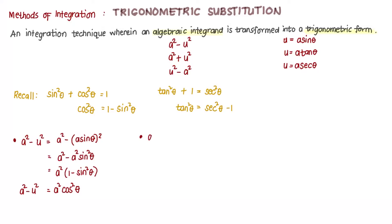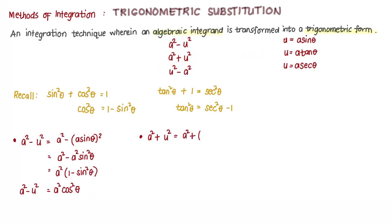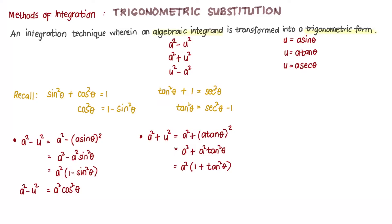For the second pattern, a squared plus u squared — you can write that in any order. For this pattern, we let u be equal to a tangent of theta. Substituting, we have a squared plus a tangent theta quantity squared, giving a squared plus a squared tangent squared theta. Factoring out a squared, that's 1 plus tangent squared theta. From the identities, tangent squared theta plus 1 equals secant squared theta. Therefore, a squared plus u squared equals a squared secant squared theta.